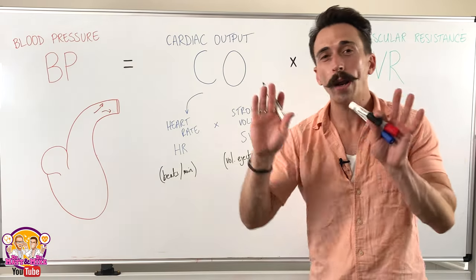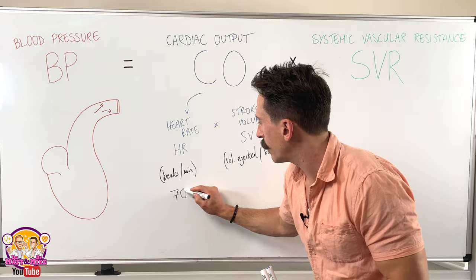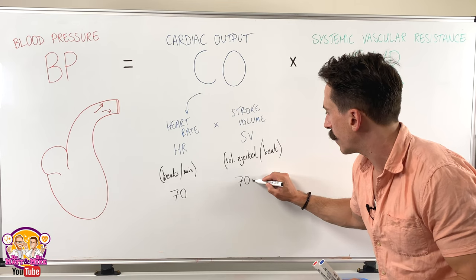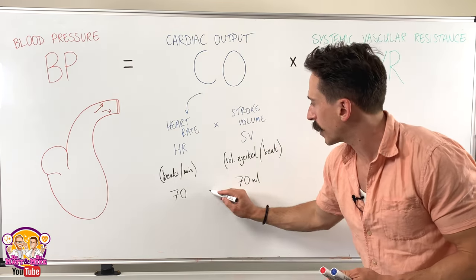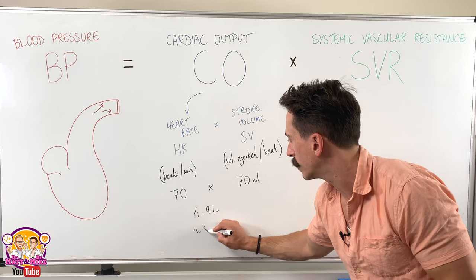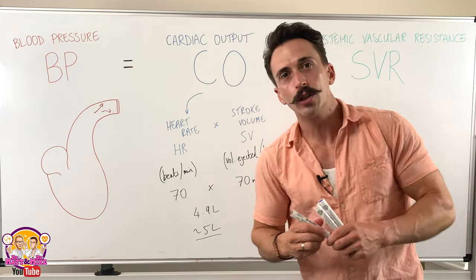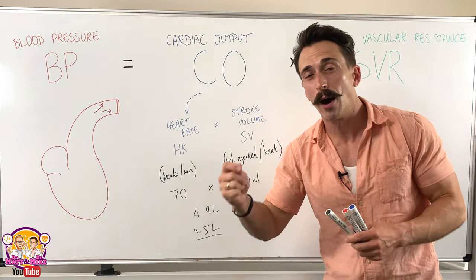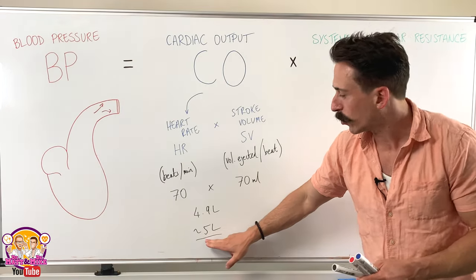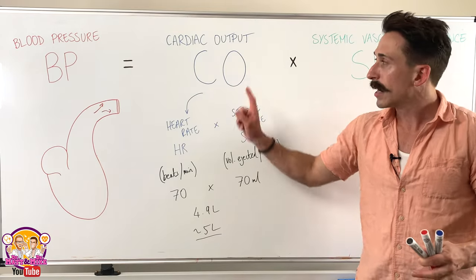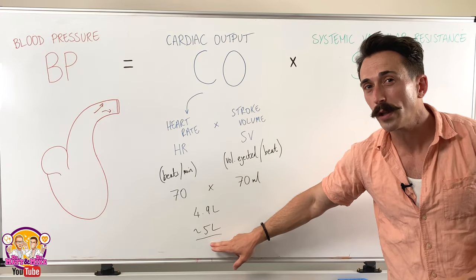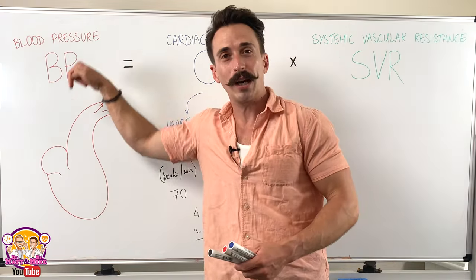On average, heart rate is 70 beats per minute. On average, the volume ejected with every beat is around 70 millilitres. It's a multiplication: 70 times 70 is 4.9 litres, which is around about 5 litres. So on average, our cardiac output — the amount of blood our heart pumps out every minute — is 5 litres. Because of this simple equation, if I were to increase that to 6 or 7 litres, cardiac output goes up and blood pressure goes up. If I drop it to 4 or 3 litres, cardiac output goes down and blood pressure goes down.